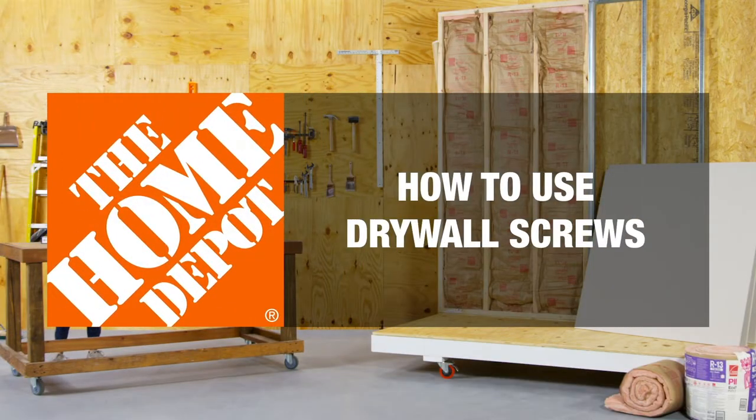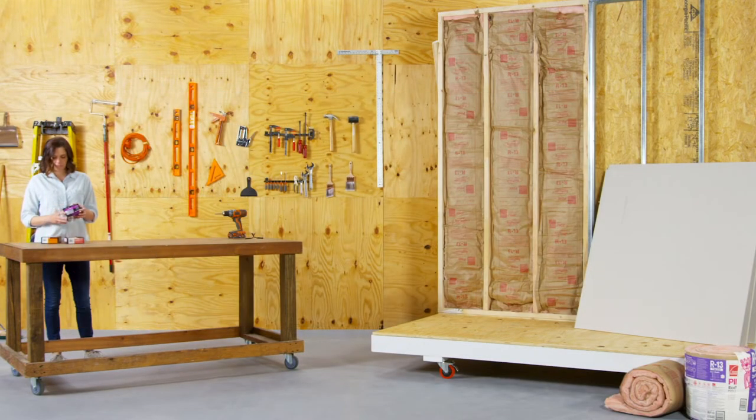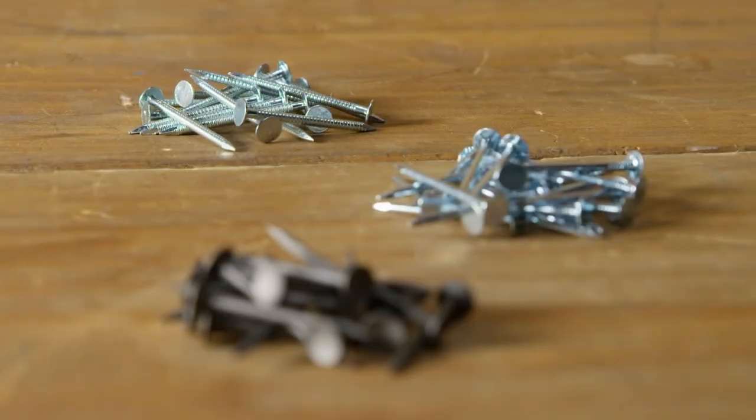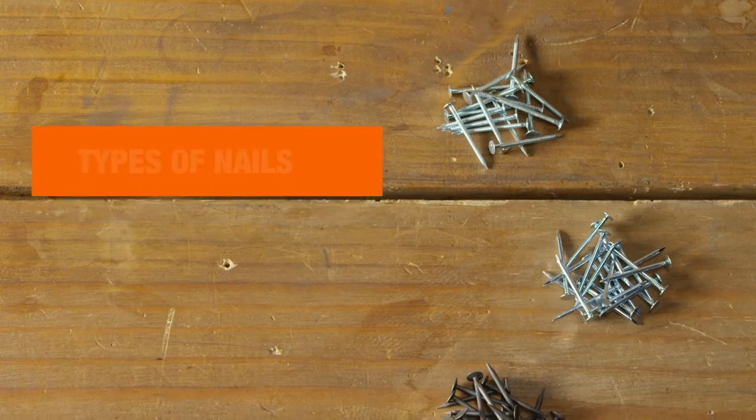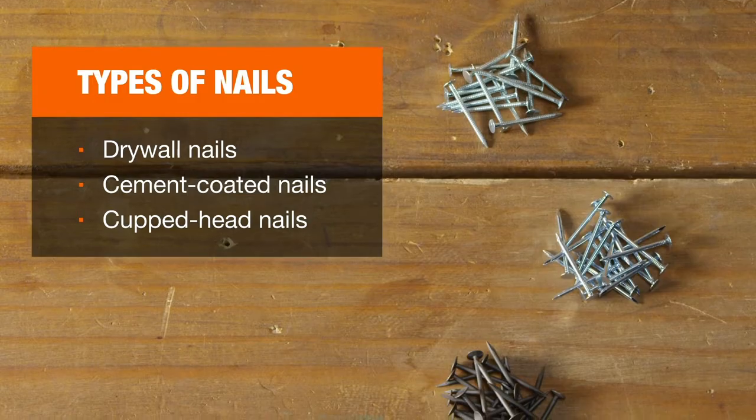Let's go over the ins and outs of drywall screws and other fasteners. Both nails and screws may be used with drywall. There are three types of nails that are drywall compatible.